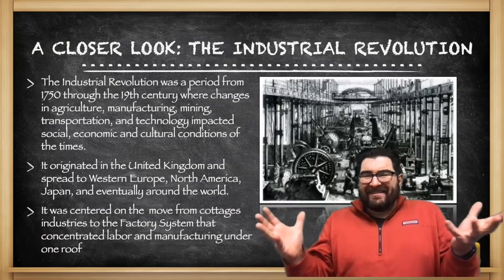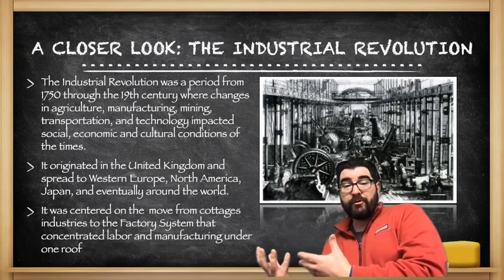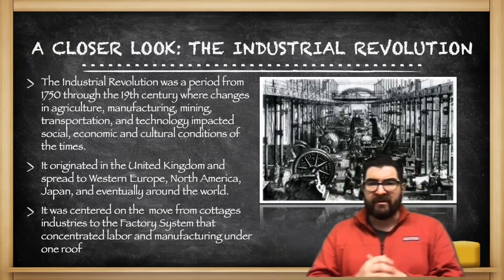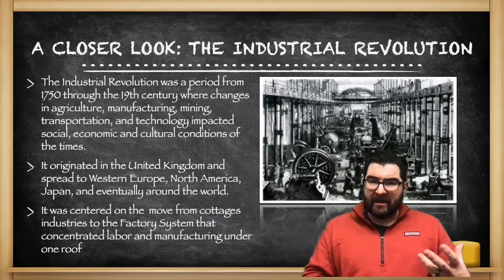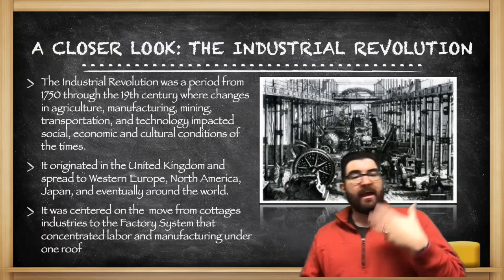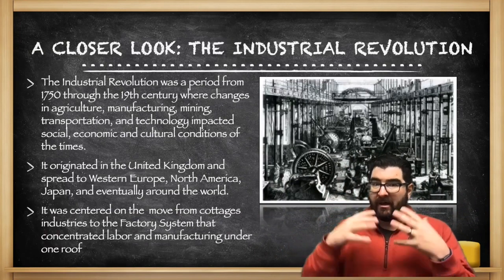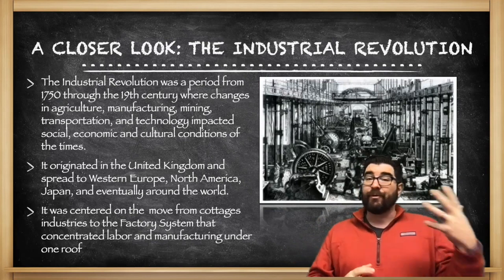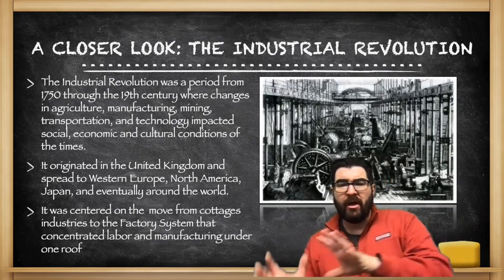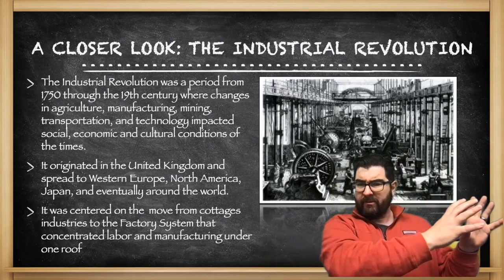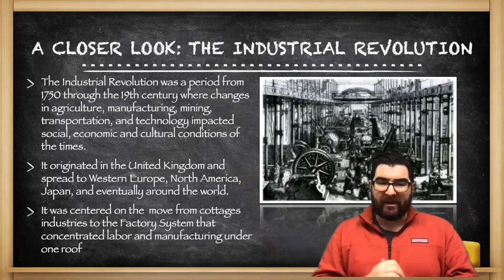A closer look — what is the Industrial Revolution? It's a period from the mid-1700s through the 19th century, the 1800s, where changes in agriculture, manufacturing, mining, transportation, and technology will impact the social, economic, and cultural conditions of this era. It originates in the United Kingdom, and from there is going to spread to other countries in Western Europe, across the Atlantic to North America, the United States, eventually Japan, and later the rest of the world.